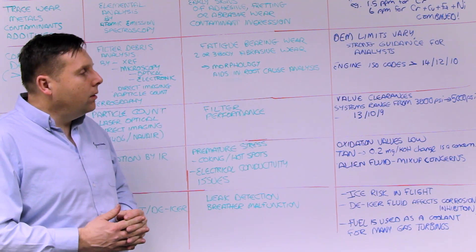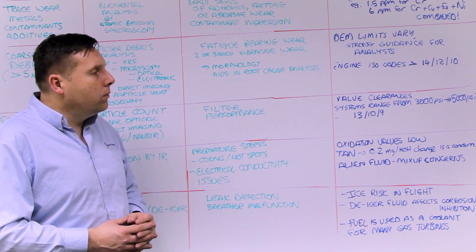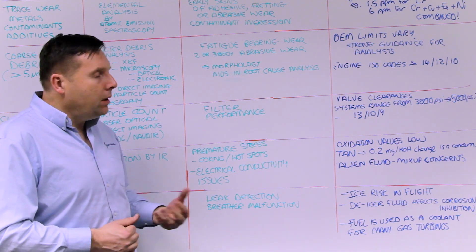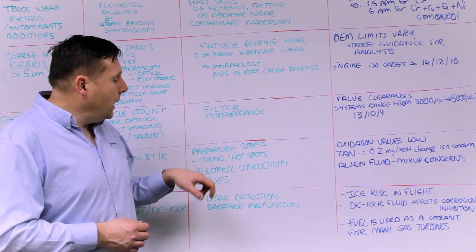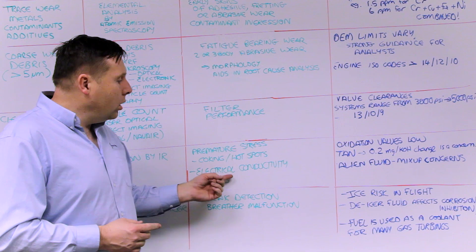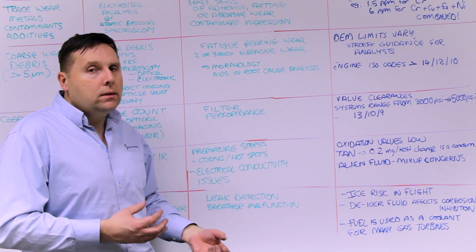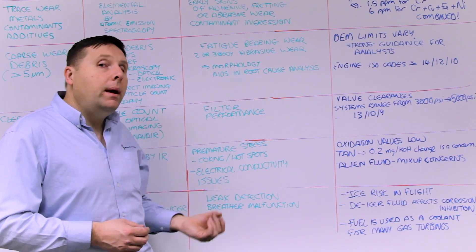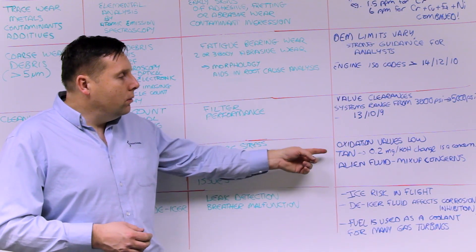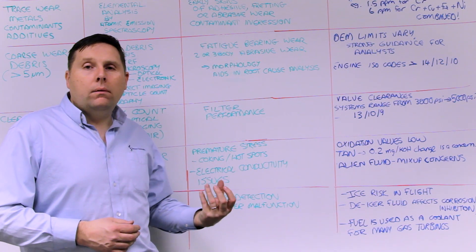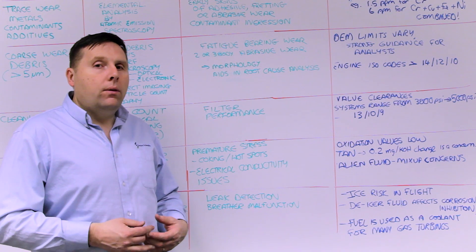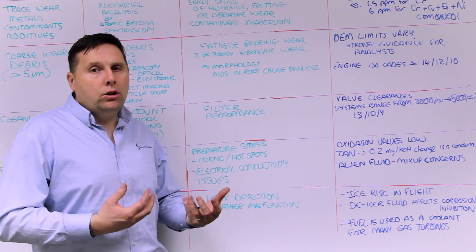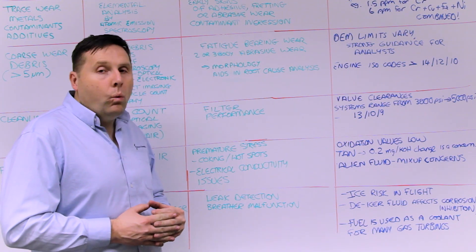What's unique in the aviation industry is that valve clearances are extremely small and system pressures range from 3,000 to 5,000 PSI with exceptionally clean requirements. For oil contamination or degradation, we're worried about premature stress on the oil, coking or hot spots in the engine, and electrical conductivity issues. Oxidation values are very low with a very small permissible change in acid number. Something called alien fluid is also a concern — for instance, a fire-resistant fluid added into a mineral-based or ester-based fluid can cause sludging and miscibility issues, which can cause problems when the aircraft is in flight.